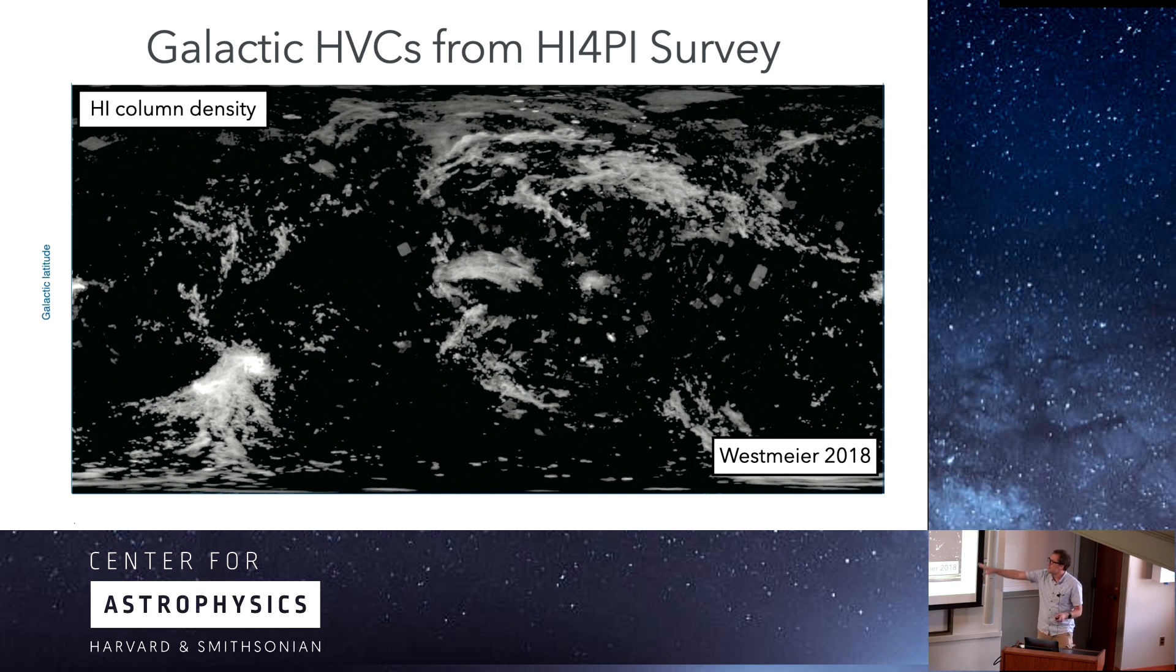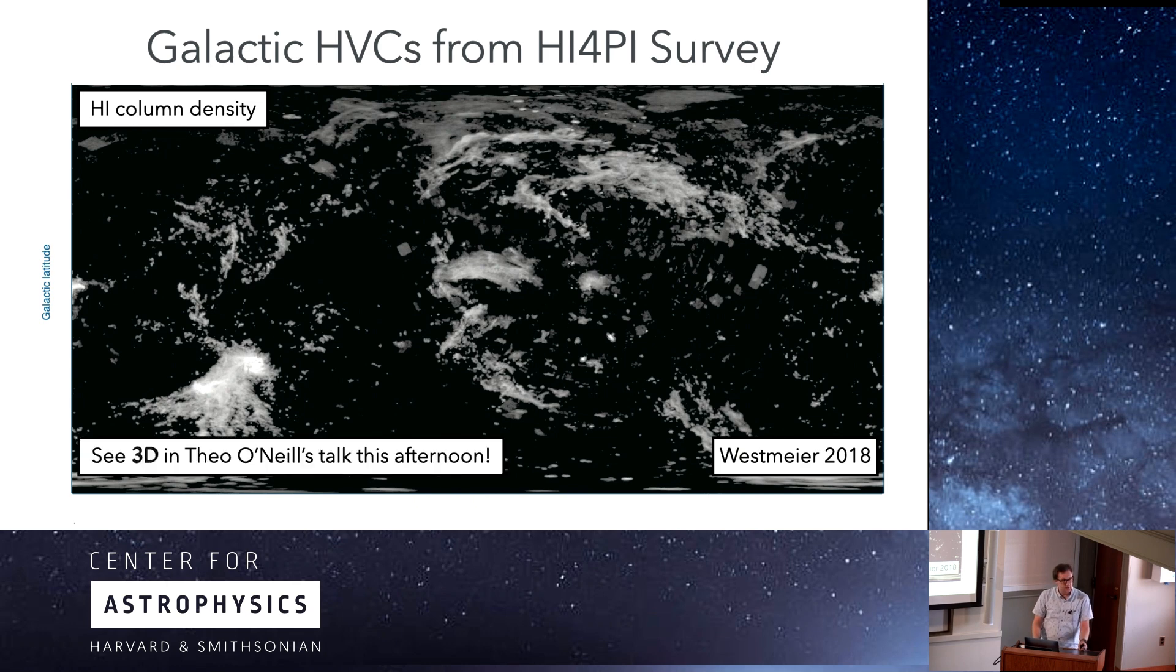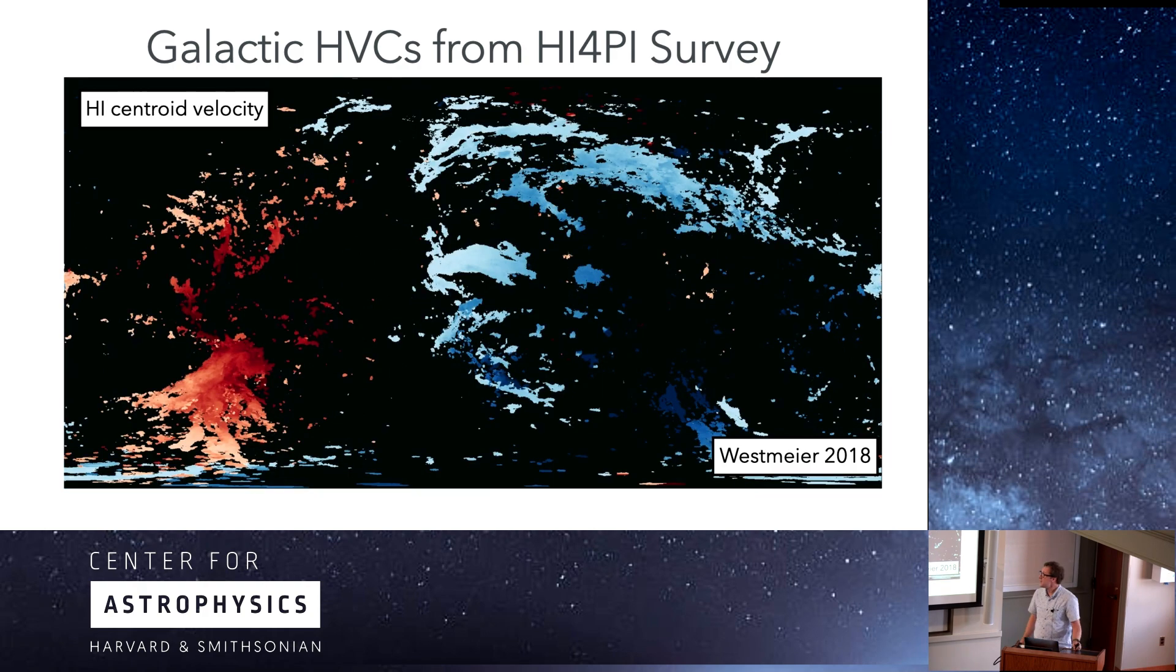This is from HI4PI. This is work by Westmeyer, trying to identify basically where are all the high-velocity clouds surrounding us. You're about to see something more in 3D that Theo is going to talk about at the end of the next session. Since it's H1, you also get the velocity. You can see this large velocity structure. I've hidden the color bar, which is not useful, but it's something like minus 400 to 400 kilometers per second. So you see both the blue and red shifted sides of the high-velocity clouds.